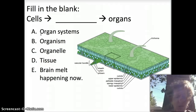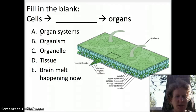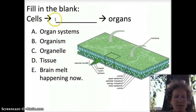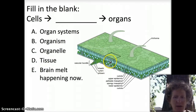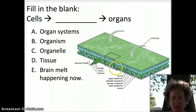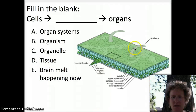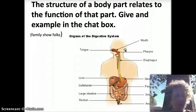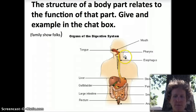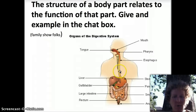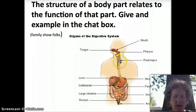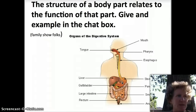We talked in class about the organization of cells. Cells organize themselves into tissues — this is a good example of plant tissue, where you can see similar types of cells grouped together. We also talked about structure and function: the structure of a body part relates to the function of that part. For example, the esophagus is a hollow organ — basically a tube — and its function is to deliver food, so its structure relates to the function.